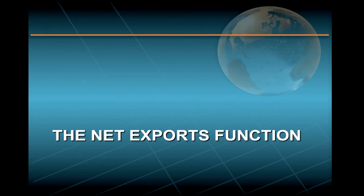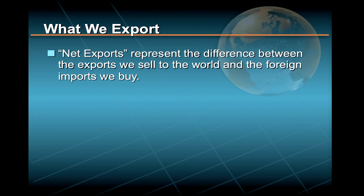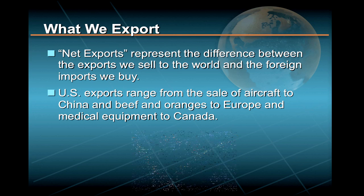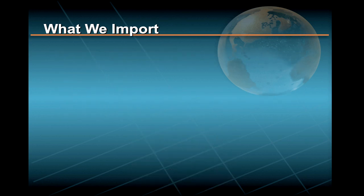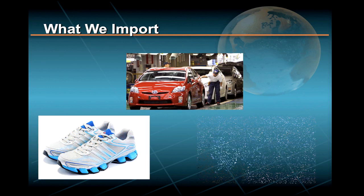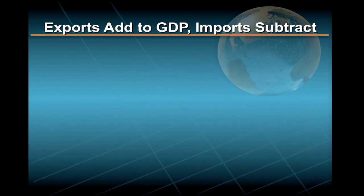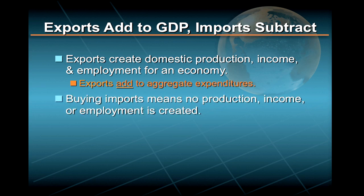The fourth component of aggregate expenditures is net exports. This component equals the value of exports minus the value of imports. U.S. exports include such things as the sale of airplanes to China, beef and oranges to Europe, and medical equipment to Canada. U.S. imports include Japanese-made automobiles, Korean-made running shoes, and oil from the Middle East. Because exports create domestic production, income, and employment, they must be added to aggregate expenditures. However, when we purchase imports from a foreign country, no such production, income, or employment is created, so imports must be subtracted from aggregate expenditures.